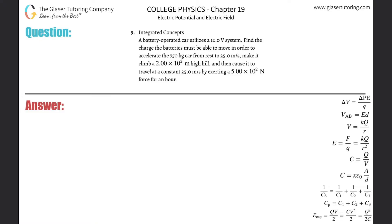Number nine — integrated concepts. A battery-operated car utilizes a 12-volt system. Find the charge the batteries must be able to move in order to accelerate the 750-kilogram car from rest to 25 meters per second, make it climb a 2×10² meter high hill, and then cause it to travel at a constant 25 meters per second by exerting a 5×10² newton force for an hour.